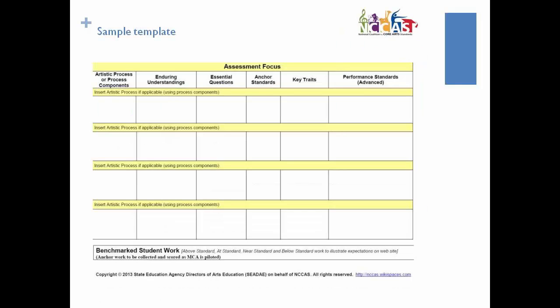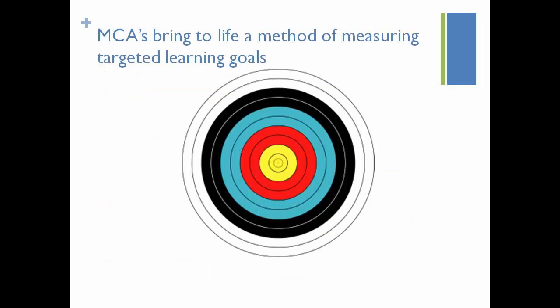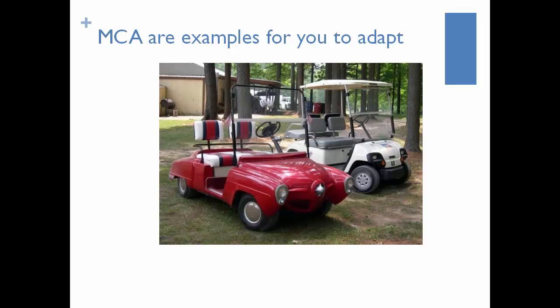In the assessment focus chart, you can see how all of the package of the standards — all those support materials and the standards themselves — weave into supporting materials. How the enduring understandings and essential questions can be used or modified or adapted for your particular classroom. How the anchor standards fit in, and what key traits you'd see — what do you look for in the student in this standard? And finally, linking that all to the performance standards. MCAs bring to life a method of measuring your targeted learning goals, and they are only models — just feel them, take them, adopt them, adapt them in any way that you please.